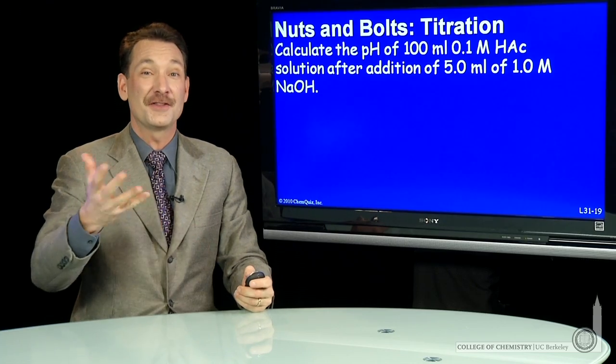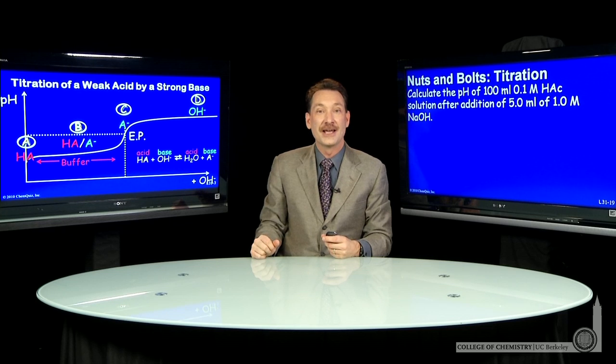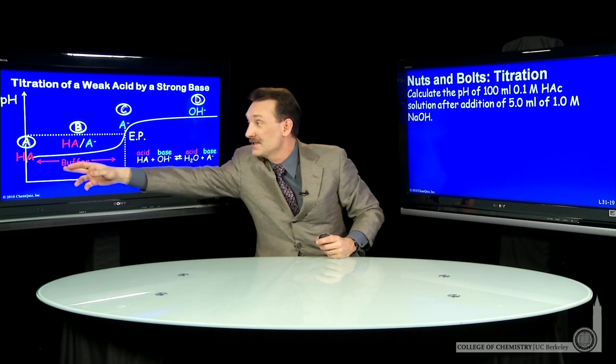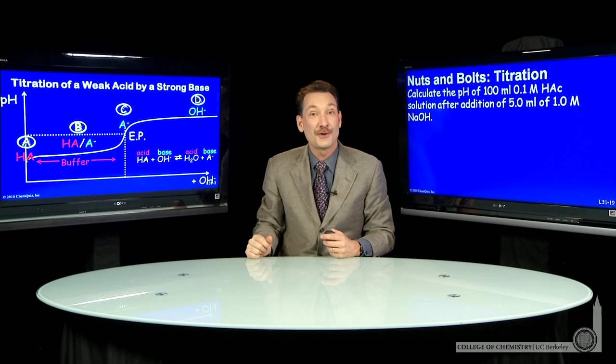So I can think about this as a titration. If I look at my titration curve, I'm starting with the weak acid HA and I'm adding some base. The question is, how far along on the titration curve does this addition of strong base take me?